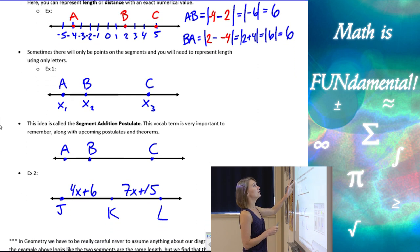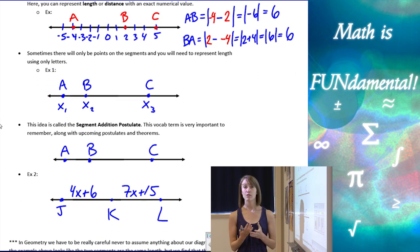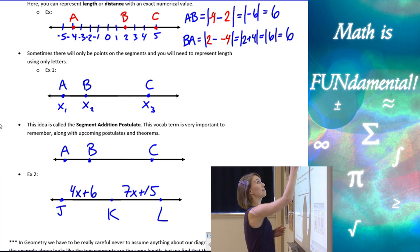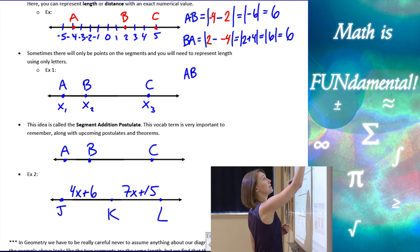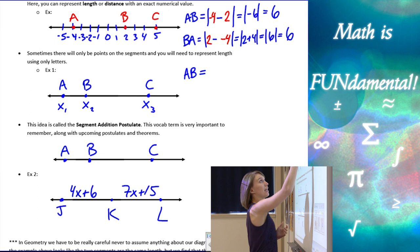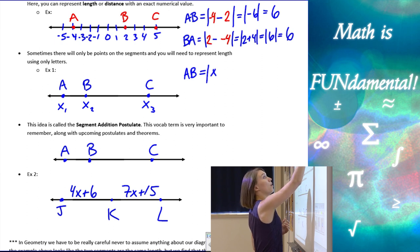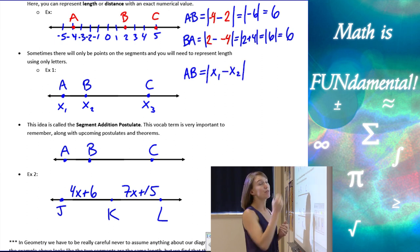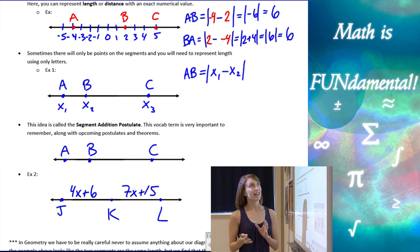Alright, let's look at the next example. Here a little different because we don't actually have coordinates. All we have are letters. So here we want to represent the length of our segments using only those letters. The length of the segment AB or BA would be X1 minus X2 and the absolute value of that because again, we can't have a negative distance. We want to turn that distance, even if it ends up being a negative number, into a positive length.